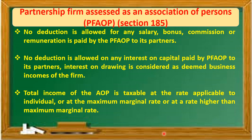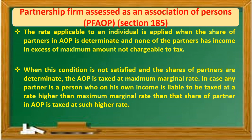Other firms — that is, association of persons (AOP). The partnership firm is assessed as an association of persons. No deduction is allowed for any salary, bonus, commission or remuneration paid to partners. No deduction is allowed on any interest on capital. Total income of the association of persons is taxable at the rate applicable to an individual, at the maximum marginal rate, or at a rate higher than maximum marginal rate. The rate applicable to an individual is applied when the share of partners in the association of persons is determinate and none of the partners has income in excess of the maximum amount not chargeable to tax.